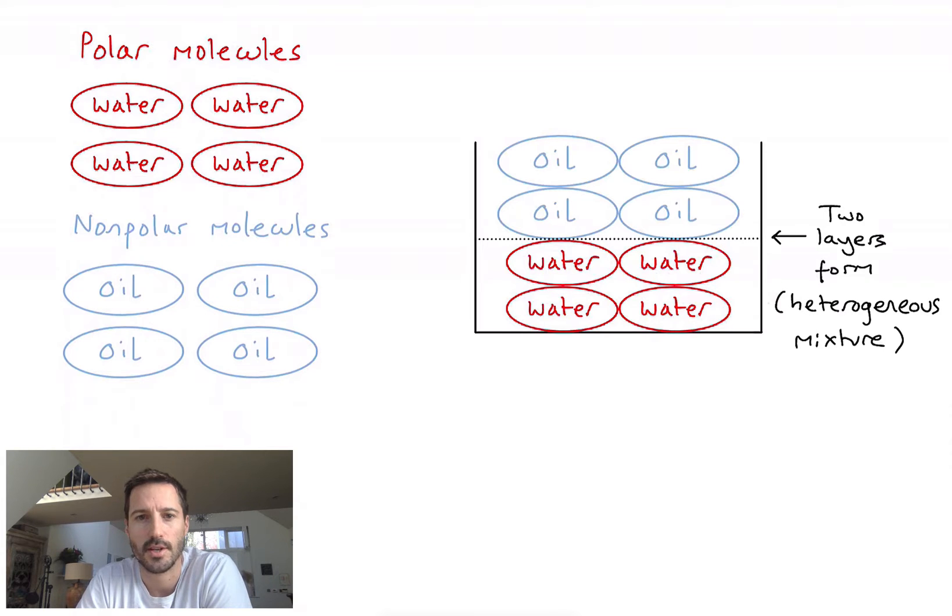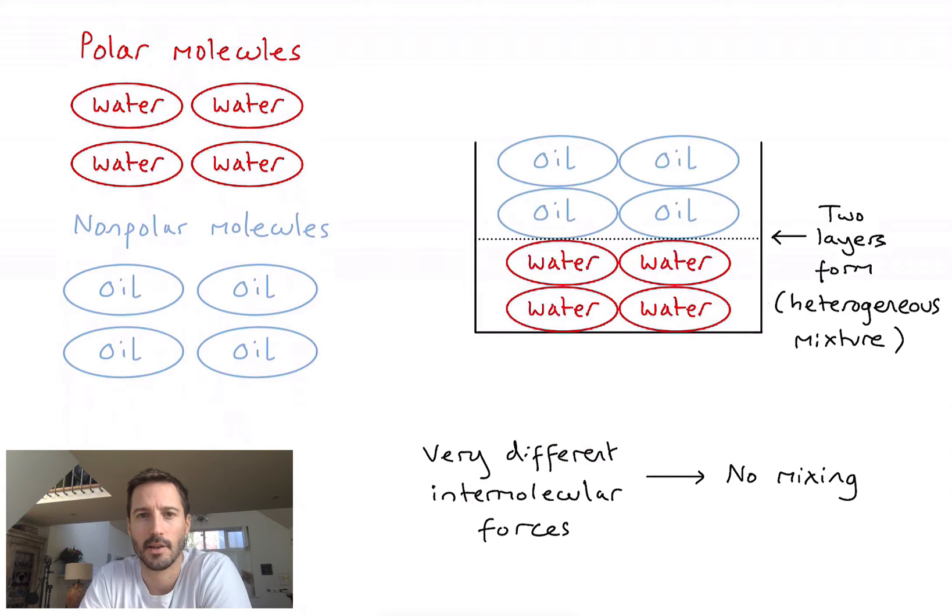If I have a mixture where there is a clear distinction between my two substances, we can call that a heterogeneous mixture. And why has this actually happened? Well, similar to our analogy that we saw earlier, my two substances here have very different intermolecular forces.